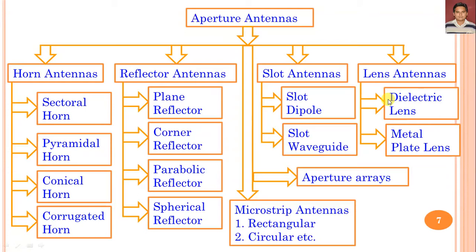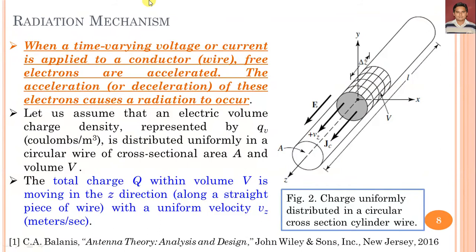These types of antennas will be discussed in subsequent lectures of this series one by one, and some other variants of these kinds of antennas may also be possible. Further, we are going to understand the radiation mechanism of the antenna — it is very important to understand how the antenna should radiate. To understand the radiation mechanism, we consider a time-varying voltage or current applied to a conductor or wire — free electrons are accelerated.